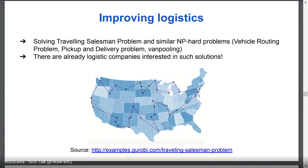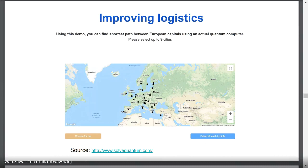Another application is improving logistics: the Travelling Salesman Problem and similar NP-hard problems in logistics — vehicle routing, pickup and delivery, van pooling. There are already algorithms which can be run on adiabatic quantum computers to find quite good solutions for those problems. A few months ago, Michał Stęchły, who was a speaker at one of our meetings, developed a web application called SolveQuantum, where it is possible to select up to nine European capitals and solve the Travelling Salesman Problem for those cities on a D-Wave adiabatic quantum computer.